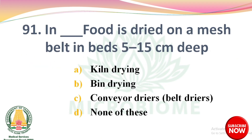Next question: in dash, food is dried on a mesh belt in beds 5–15 cm deep. Options: kiln drying, bin drying, conveyor driers, none of these. The right answer is Option C: conveyor driers, also called belt driers.